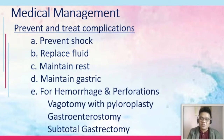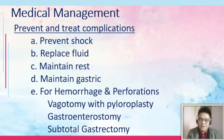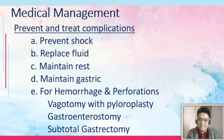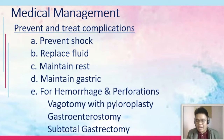To prevent shock, monitor for signs and symptoms of shock, replace fluids using isotonic solutions such as plain LR or plain NSS, and use large bore needles — gauge 18 or gauge 20 — in anticipation of bleeding. Maintain gastric pH by avoiding high-acid foods. For hemorrhage and perforation, surgical procedures include vagotomy with pyloroplasty, gastroenterostomy, and subtotal gastrectomy.